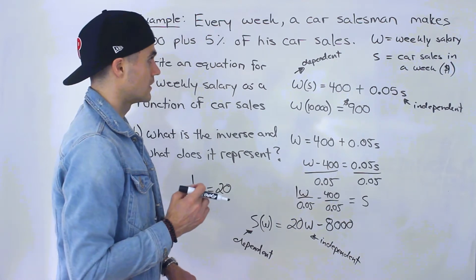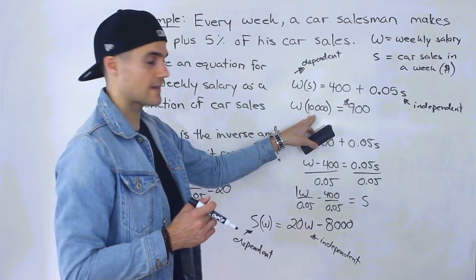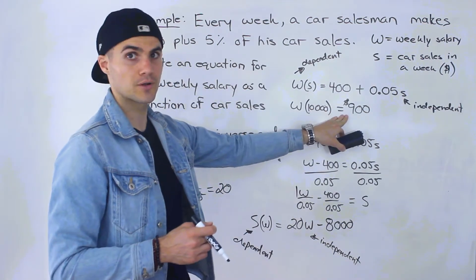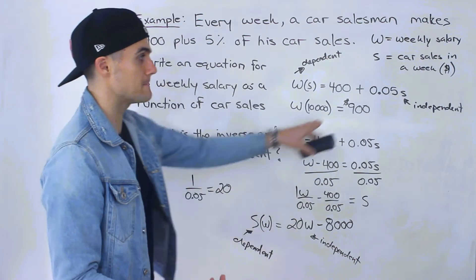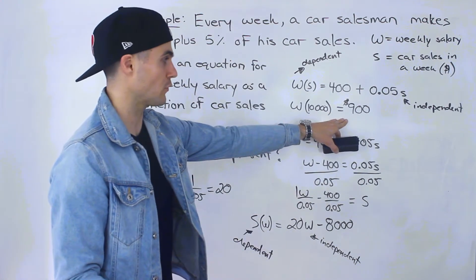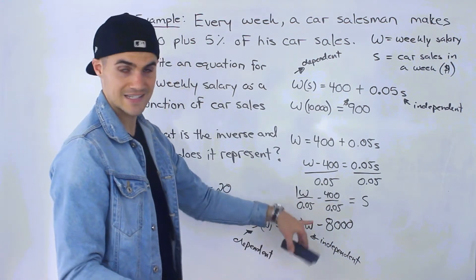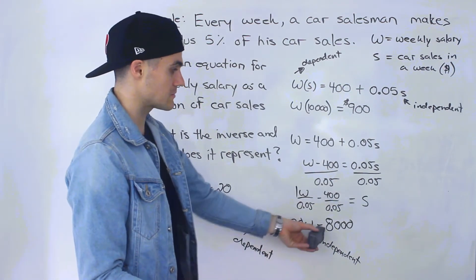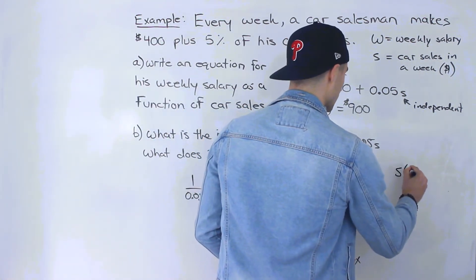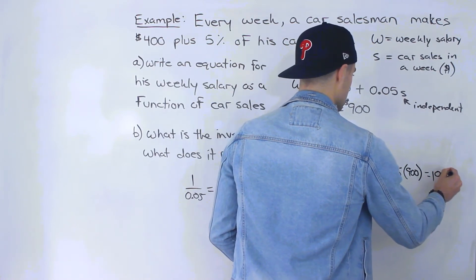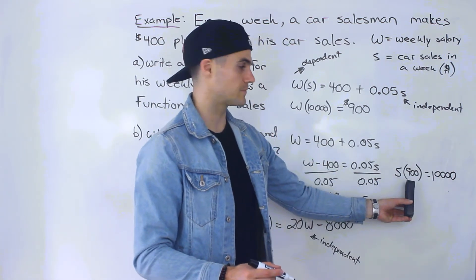So for example, here I said what would be the weekly salary if you sold $10,000 worth of cars? You'd get 900. Well, what if we switch that up and we asked how many car sales do you have to make to make $900 in salary for the week? So we plug in this 900 here for the W. 20 times 900 gives us 18,000, and then 18,000 minus 8,000 would give us 10,000. Right, so S of 900 would give us 10,000. So we'd have to make $10,000 worth of car sales to make a salary of $900.